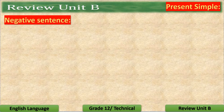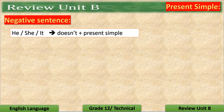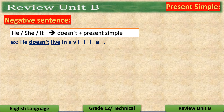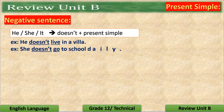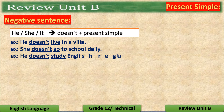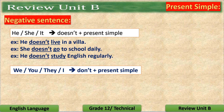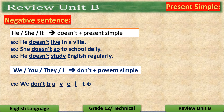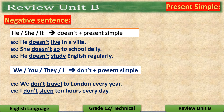With negative sentences, we follow the following rules. If the subject is singular, we use the present simple without any addition — the base form. Like the examples: He doesn't live in a villa. She doesn't go to school daily. And he doesn't study English regularly. While with a plural subject or I, we use don't plus the base form of the verb: We don't travel to London every year. And I don't sleep 10 hours every day.